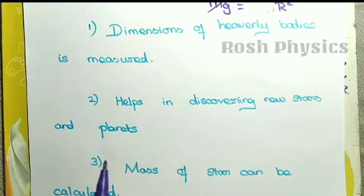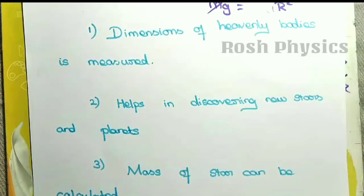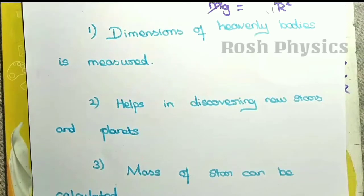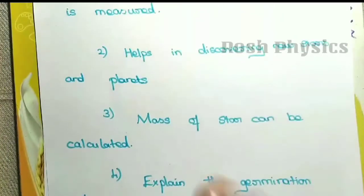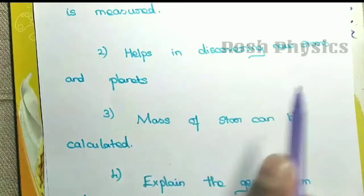The next application is that new stars and planets can be discovered more easily. By the use of telescopes — Kepler's telescope, Hubble's telescope, and other telescopes — as well as satellites, we are able to find out new stars and planets in recent days.